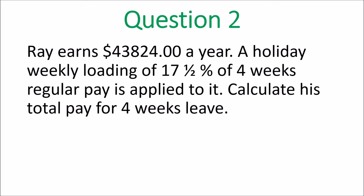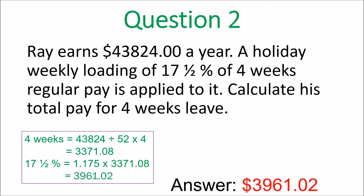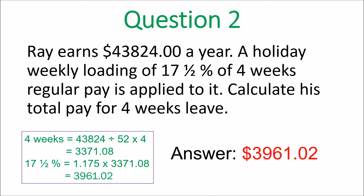Question 2. You have to figure out what his salary is for 4 weeks first, so you divide by 52, then multiply by 4. You get $3,271.08. Then 17.5% of that gives $3,961.02. You needed your calculator for that one.